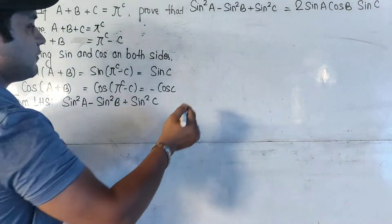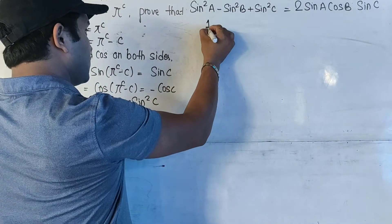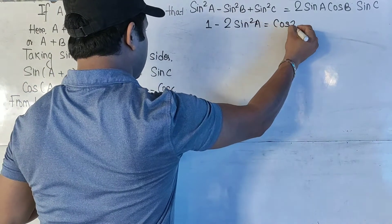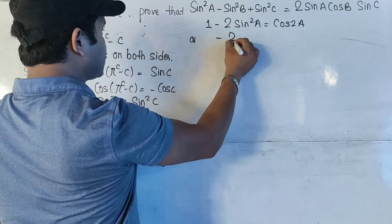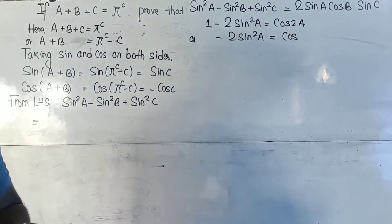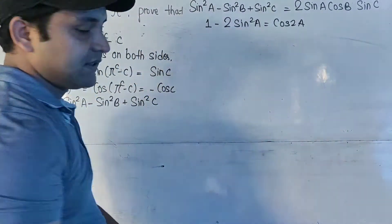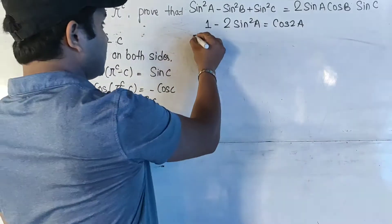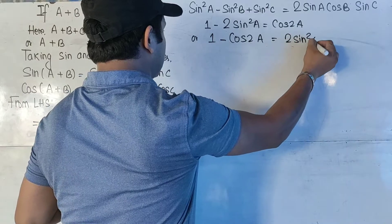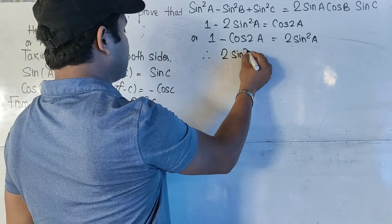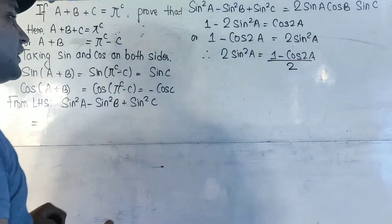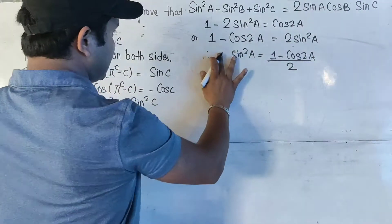Let us recall the formula. According to our formula, 1 - 2sin²A = cos2A. Solving further, we get 1 - cos2A = 2sin²A, so sin²A = (1 - cos2A)/2. This is simply a derivation of the cosine double angle formula.